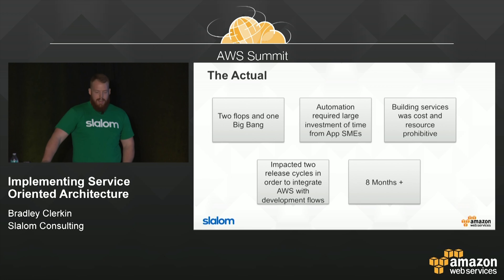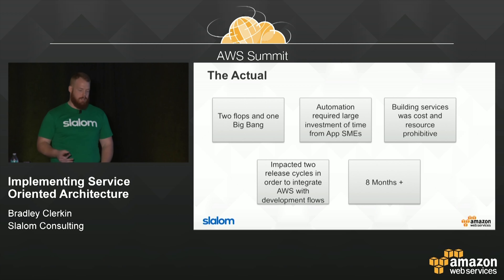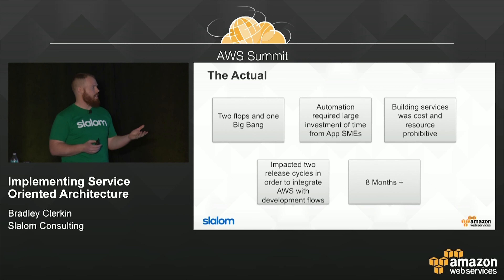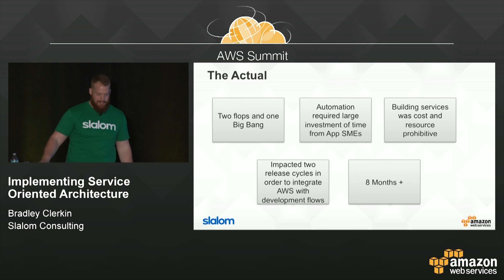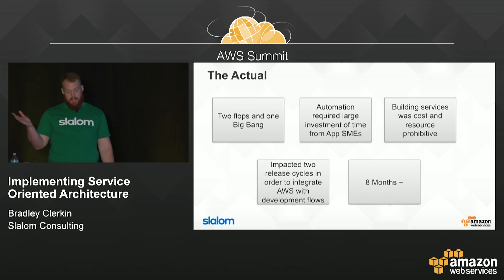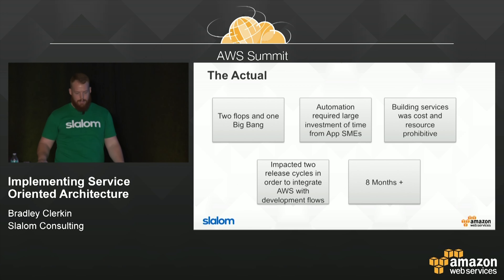What actually happened: we had two flops and one big bang. We failed at the last hour of migration twice because CRC checks on the databases wouldn't pass. For a financial services firm, when auditors come in, the first thing they ask is how you confirmed your moved data was an exact copy with no lost transactional data. We learned our lessons and finally had one successful big bang. Once they were there, it worked — they got calls saying the interface was working great, performing great.